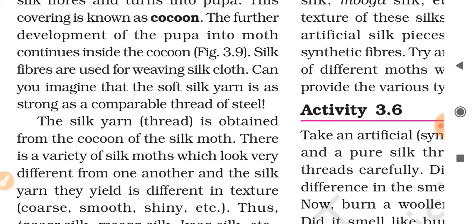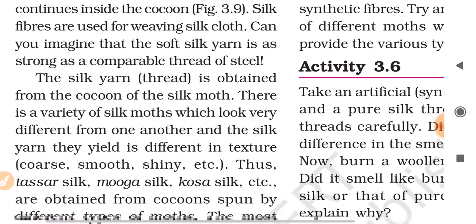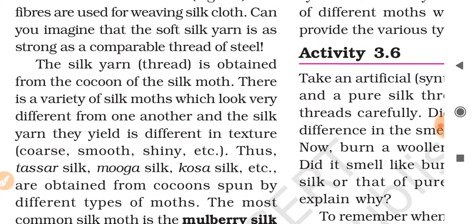Silk fibers are used for weaving silk cloth. Can you imagine that the soft silk yarn is as strong as a comparable thread of steel? The silk yarn is obtained from the cocoon of the silk moth. There is a variety of silk moths which look very different from one another, and the silk yarn they yield is different in texture — it can be coarse, smooth, shiny, etc.